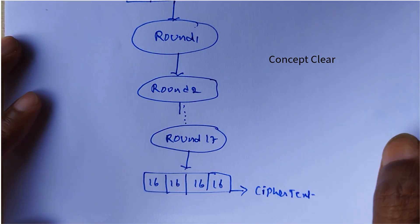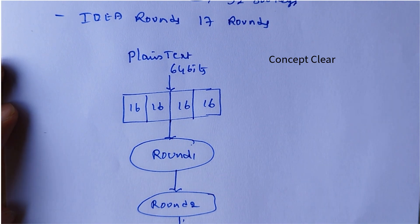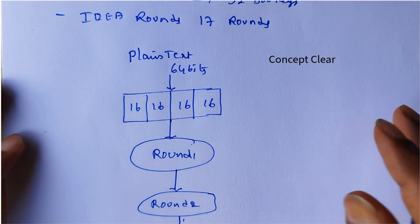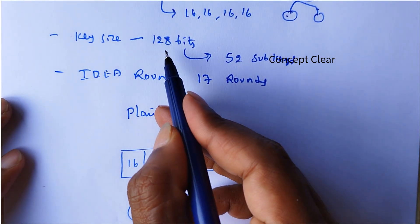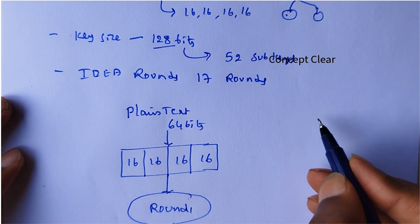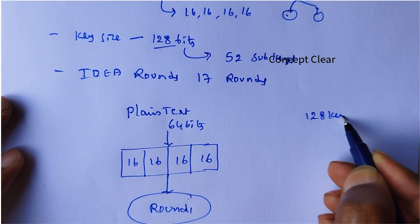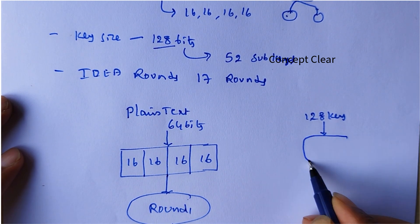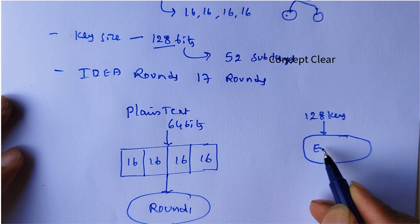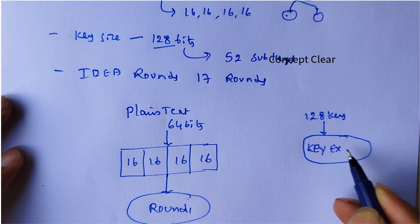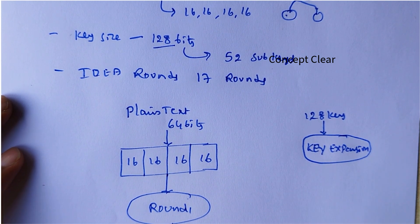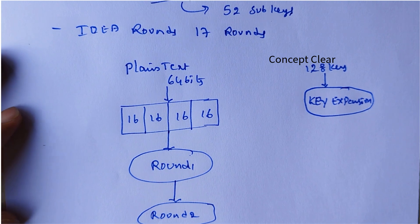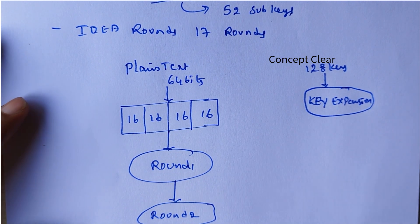After 17 rounds, we will get the ciphertext. The main thing here is the key — the key size is 128 bits. This 128-bit key goes into key expansion. Different books give different diagrams, but all diagrams are similar relative to the algorithm.